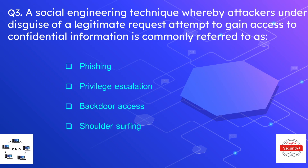Question number three: a social engineering technique whereby an attacker, under the disguise of a legitimate request, attempts to gain access to confidential information is commonly referred to as — the options are phishing, privilege escalation, backdoor access, and shoulder surfing. The correct answer is phishing, which is the generic term for attempts to gain access to confidential information.